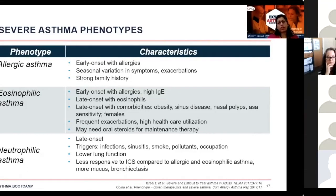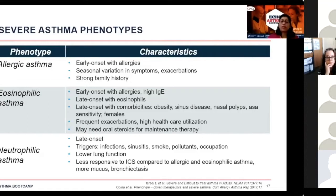Eosinophilic asthma has two types. Early-onset patients have allergies and may have a high IgE level. Late-onset eosinophilic asthma typically demonstrates eosinophilic inflammation, with patients having many comorbidities: sinus disease, gastroesophageal reflux disease, obesity, and more often being women. They may also have aspirin sensitivity, are high healthcare utilizers with frequent exacerbations, emergency room visits, and hospitalizations, and some may need oral corticosteroids for long-term maintenance therapy.